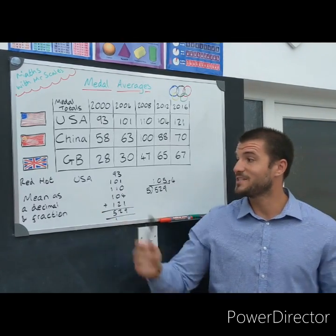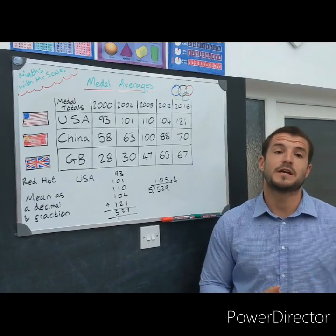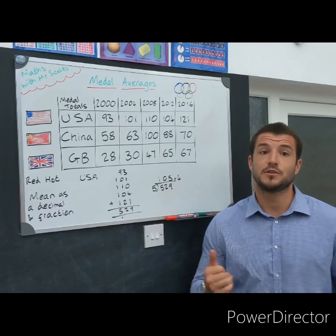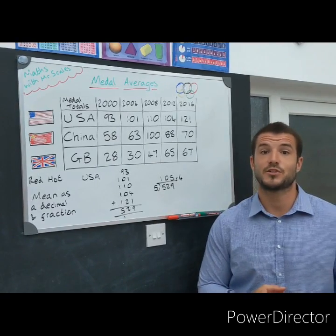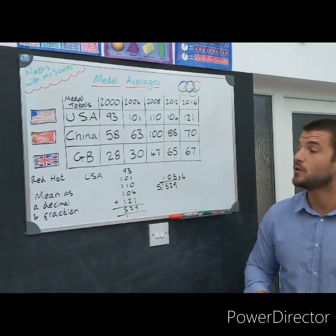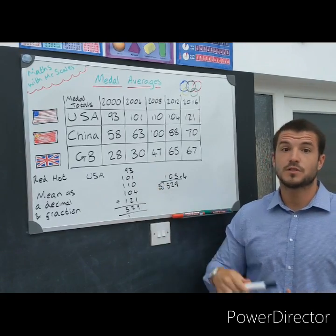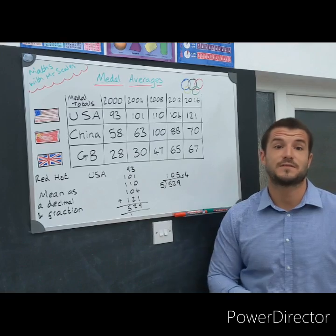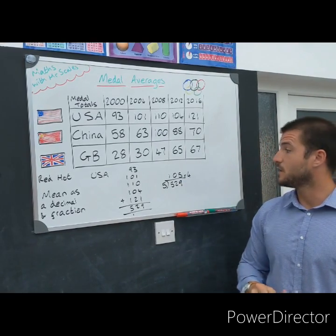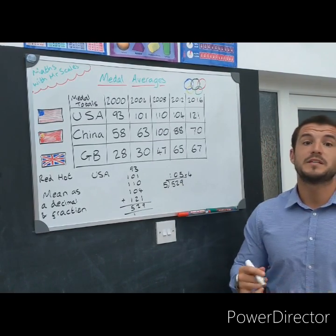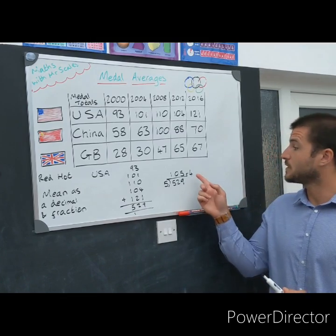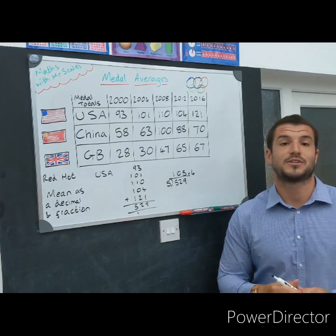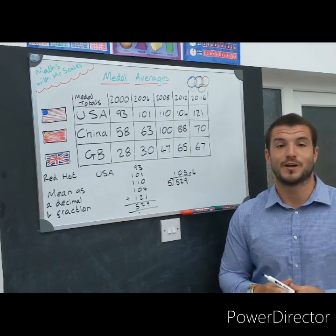And for those of you attempting our red hot challenge, you still need to work out the mean just like you did with our scorching challenge, but I don't want your answer left as a remainder — you need to be converting it to a fraction and a decimal. If we take USA for example, we would add the numbers up to give us a total, divide that total by how many sets of data there are, and that would give us an answer. Here we would need to look at how many were remaining and what that was out of, and then convert that fraction to a decimal as well. Good luck with that one.